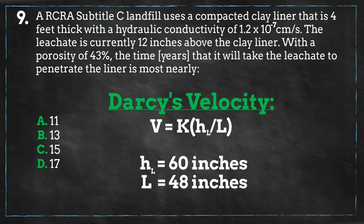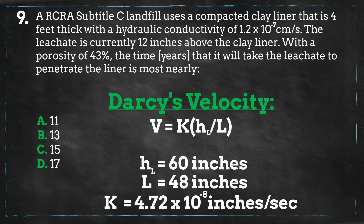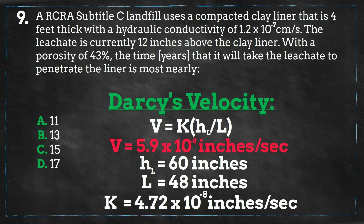Now that we have all of the information we need to solve for the Darcy velocity, we will convert our hydraulic conductivity to units of inches per second, and we get a velocity of 5.9 times 10 to the negative 8 inches per second.